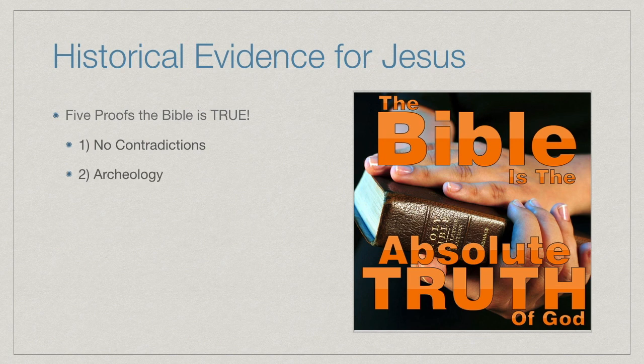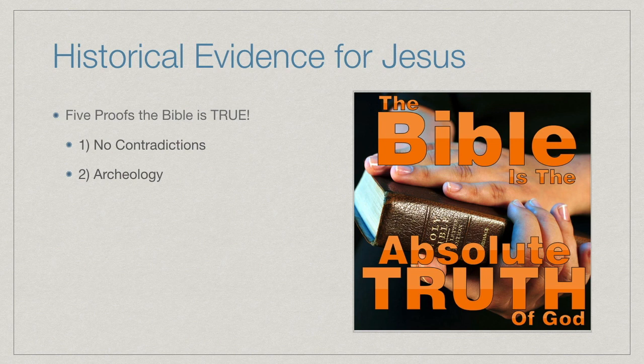Number two: archaeology. The more that people dig in the Middle East, the more they discover that the things of the Bible are true and the events are accurate. When you read about the Hittites, Sodom and Gomorrah, King David, Nebuchadnezzar, the Babylonians, the Greeks, the Romans, the Medo-Persians — we're looking at real events that took place. When we look at the Holy Land or Jerusalem, we know these things are accurate, especially in the New Testament.